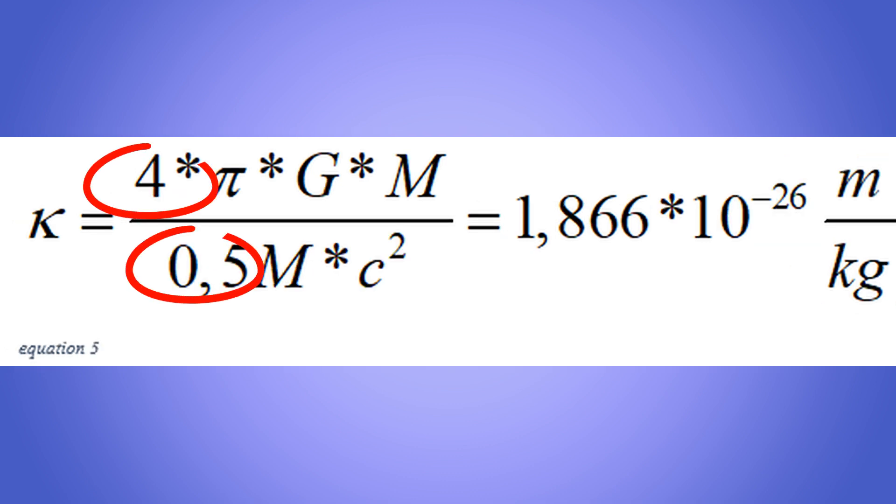We recognize Gm, the gravitational constant times central mass. Equation 6.